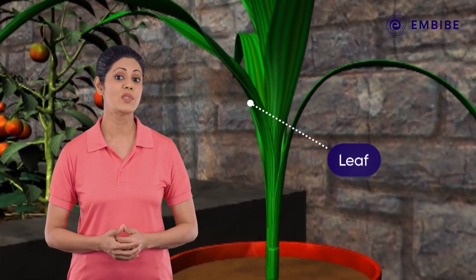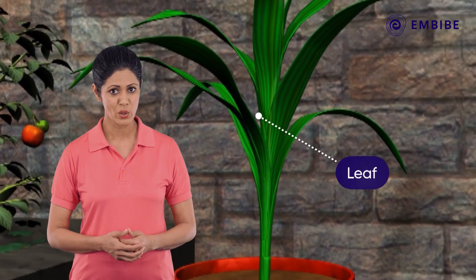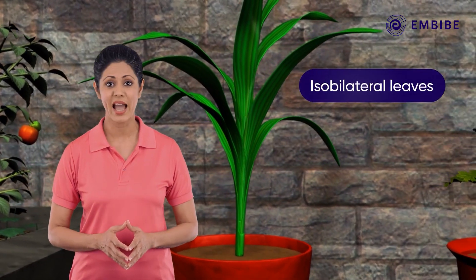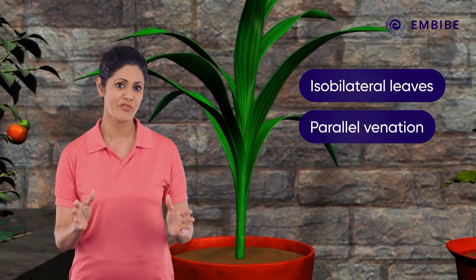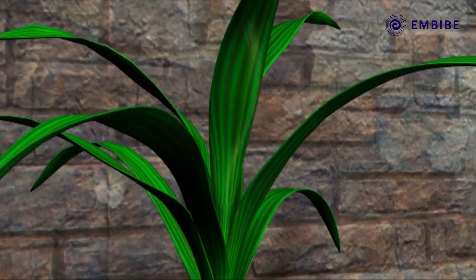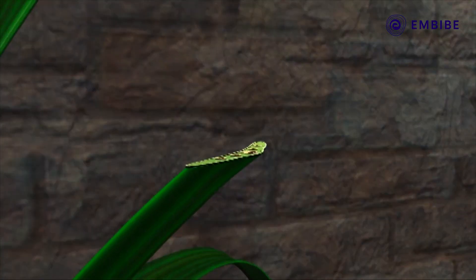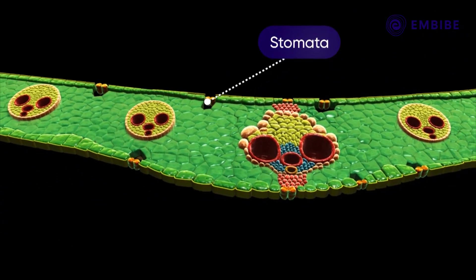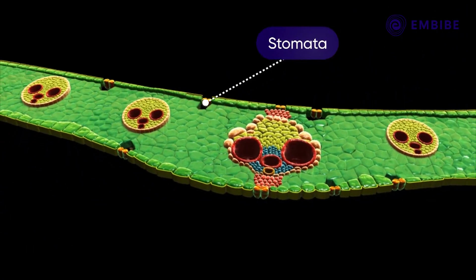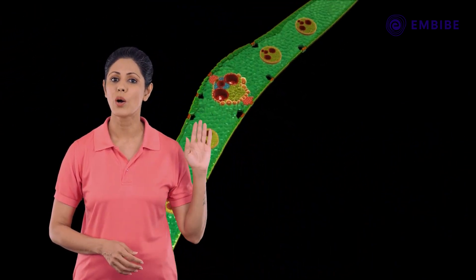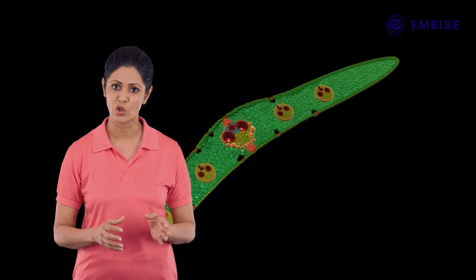If we observe the leaves of the maize plant, we see that they are isobilateral leaves and show a parallel type of venation. If we look at a section of such a leaf, we observe equal numbers of stomata on both the upper and lower epidermis.